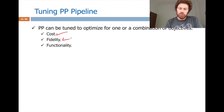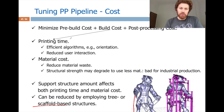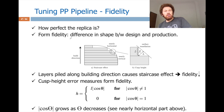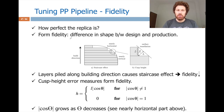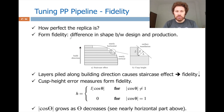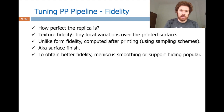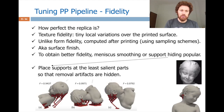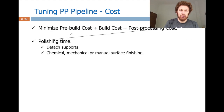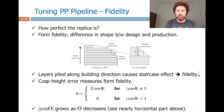Fidelity is about how perfect the replica is compared to the digital model — both form fidelity and texture fidelity. Form fidelity is the difference in shape between design and production. Texture fidelity concerns tiny local variations over the printed surface.